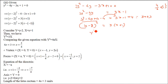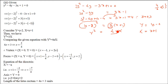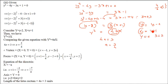Comparing with Y² = 4aX form: wherever y appears we write Y = y - 2, and wherever x appears we write X = x + 1. So 4a = 3, giving a = 3/4. For the vertex, Y = 0 means y - 2 = 0 so y = 2, and X = 0 means x + 1 = 0 so x = -1. The vertex is (-1, 2).